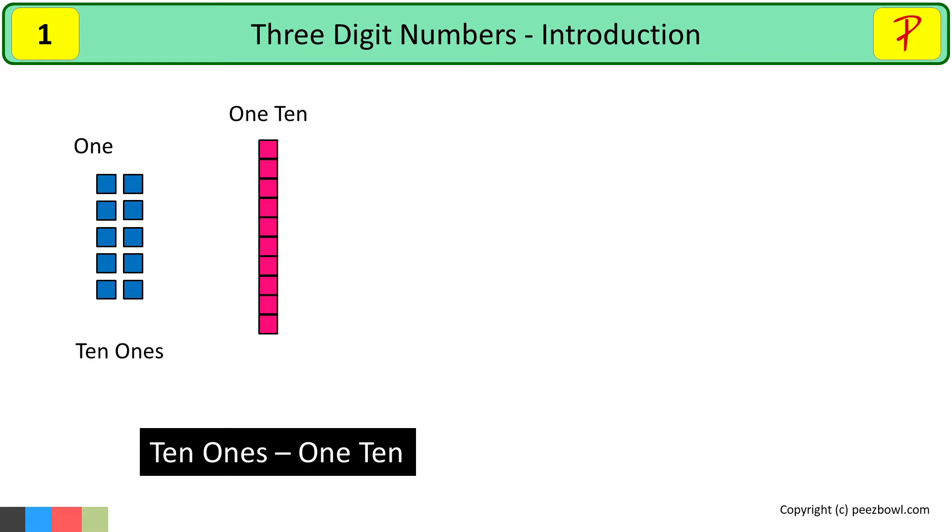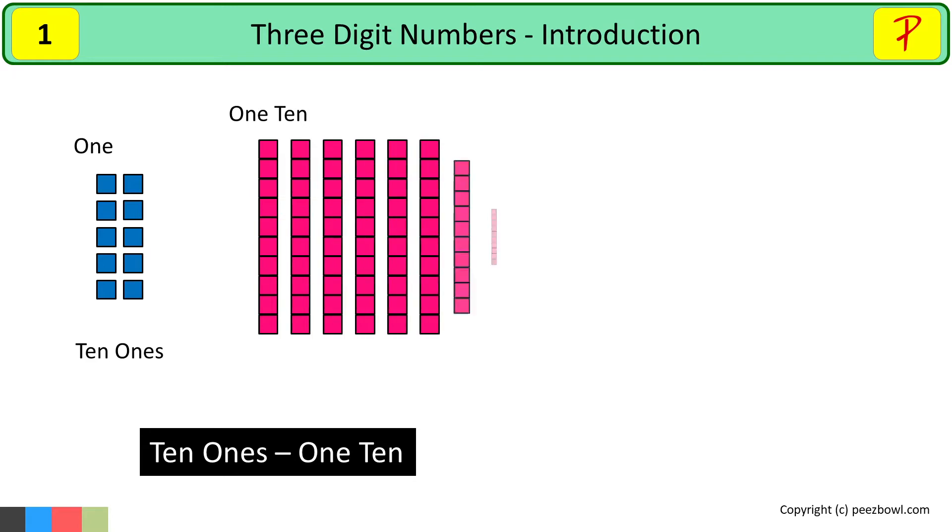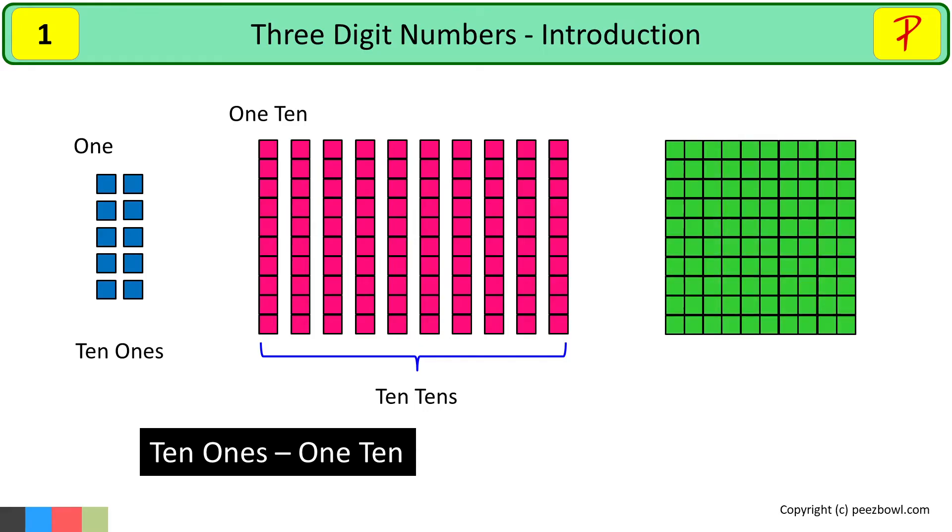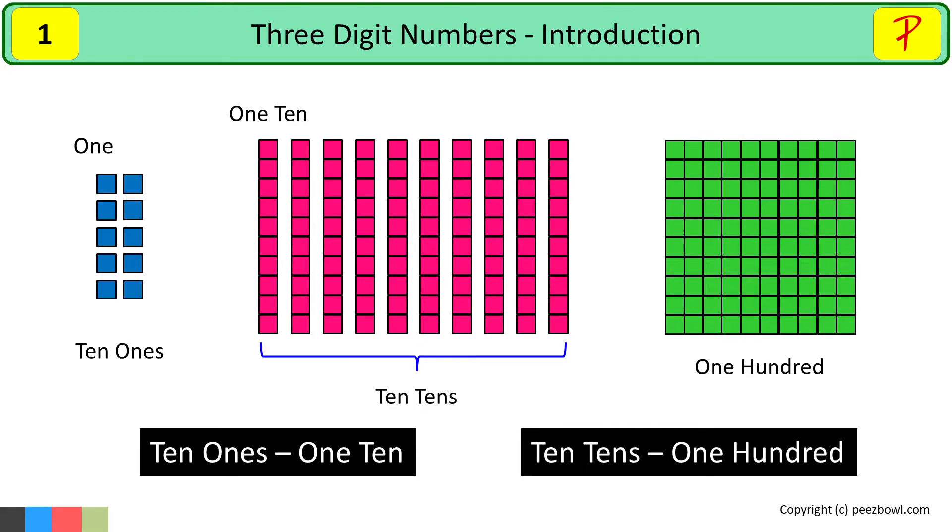Now let us bring nine more tens lines, so that in total we have 10 tens. See here, this group is 10 tens and when we combine these 10 tens together then it makes 100. So we can say that 10 tens is equal to 100. Hope this is clear to you.